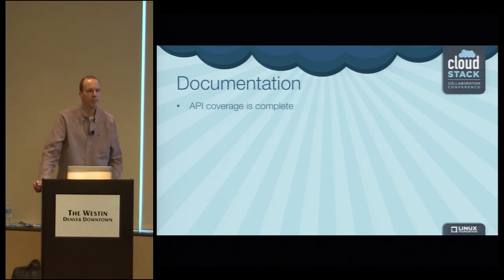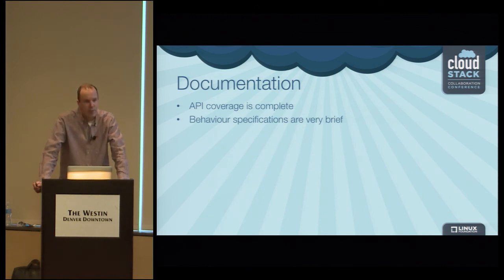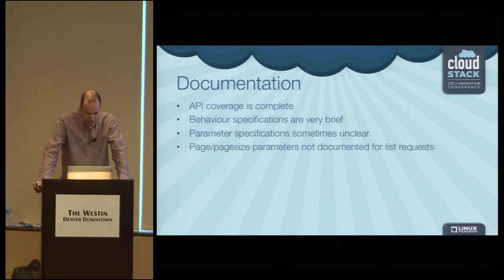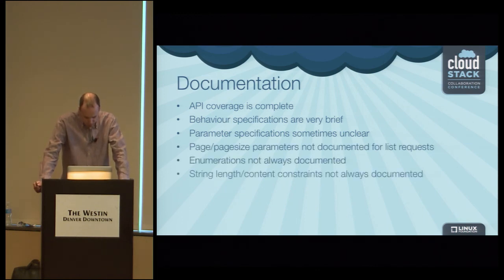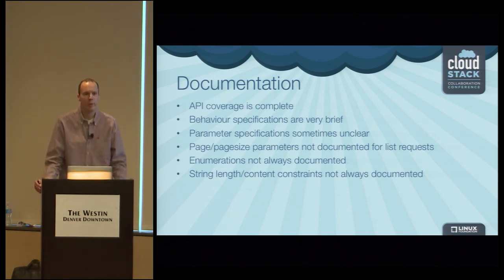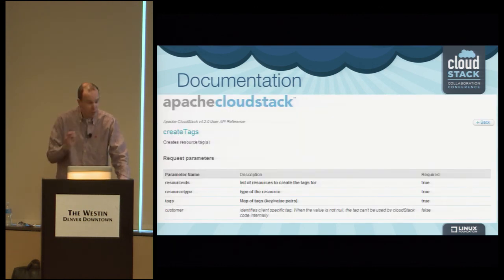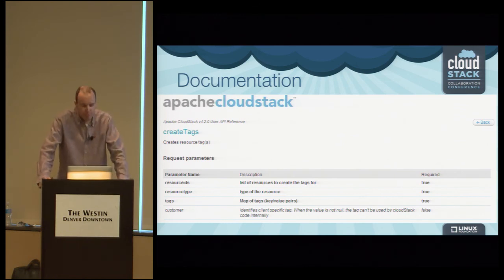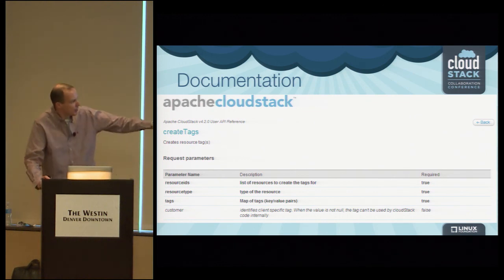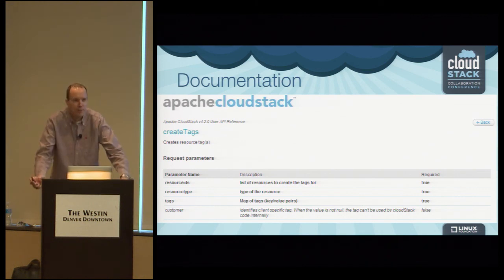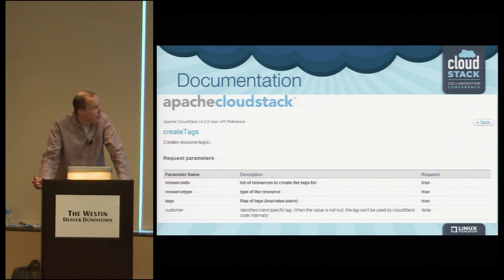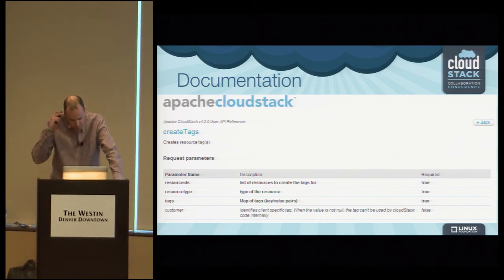The API documentation was another challenge. CloudStack has complete API documentation because it's generated automatically, but some behavior specifications are brief and some parameter specifications are unclear. For example, we had issues with string length and content limitations — we'd specify names for objects that were too long or contained disallowed characters, get errors back from the API, but extra documentation would have prevented hitting those problems. For the create tags API, there's no explanation of what strings to specify for the resource type — we had to do some Googling and research on user forums to find out.